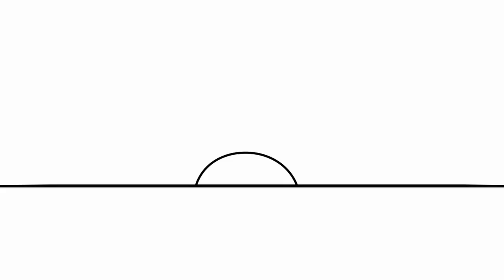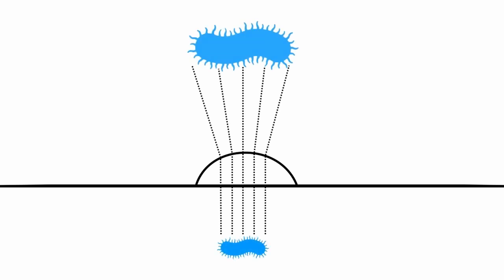Notice how the shape of this object changes as it moves under the droplet? When light waves reach a drop of water, they bend, spreading out. The result is that whatever is underneath the water droplet looks bigger.